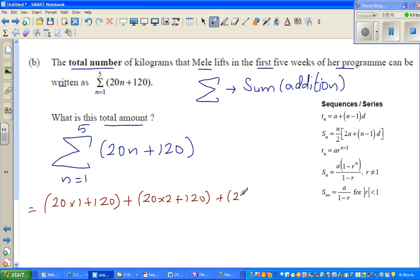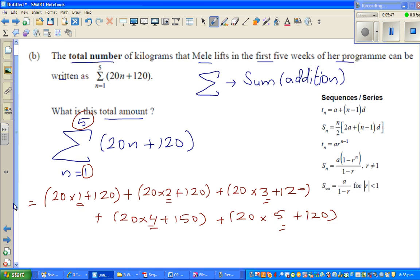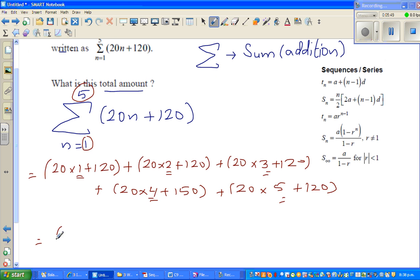And keep adding, which is (20 times 3 + 120). You have to keep going up to 5, plus (20 times 4 + 120) plus (20 times 5 + 120). You have to stop here because n is from 1 to 5.